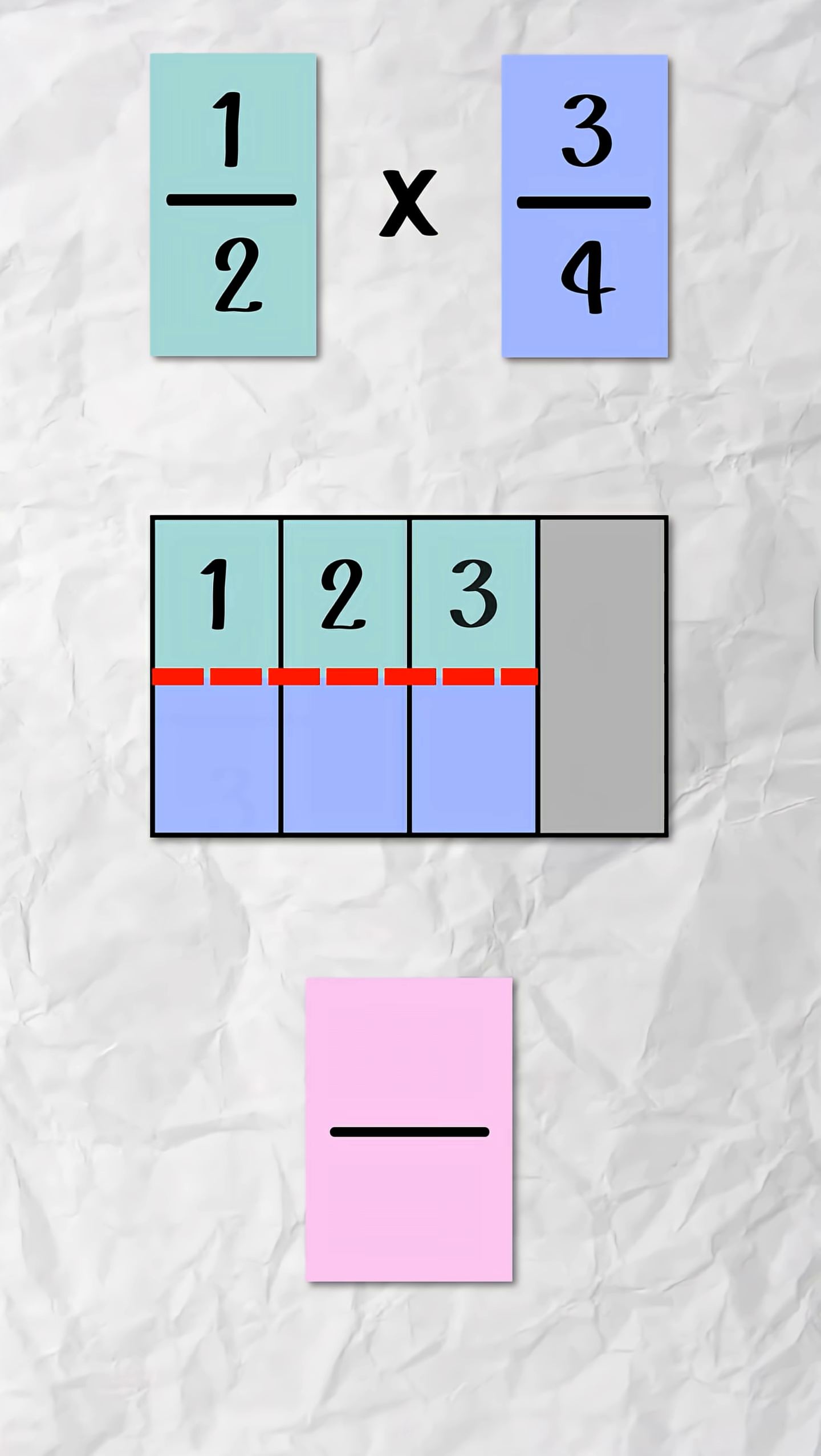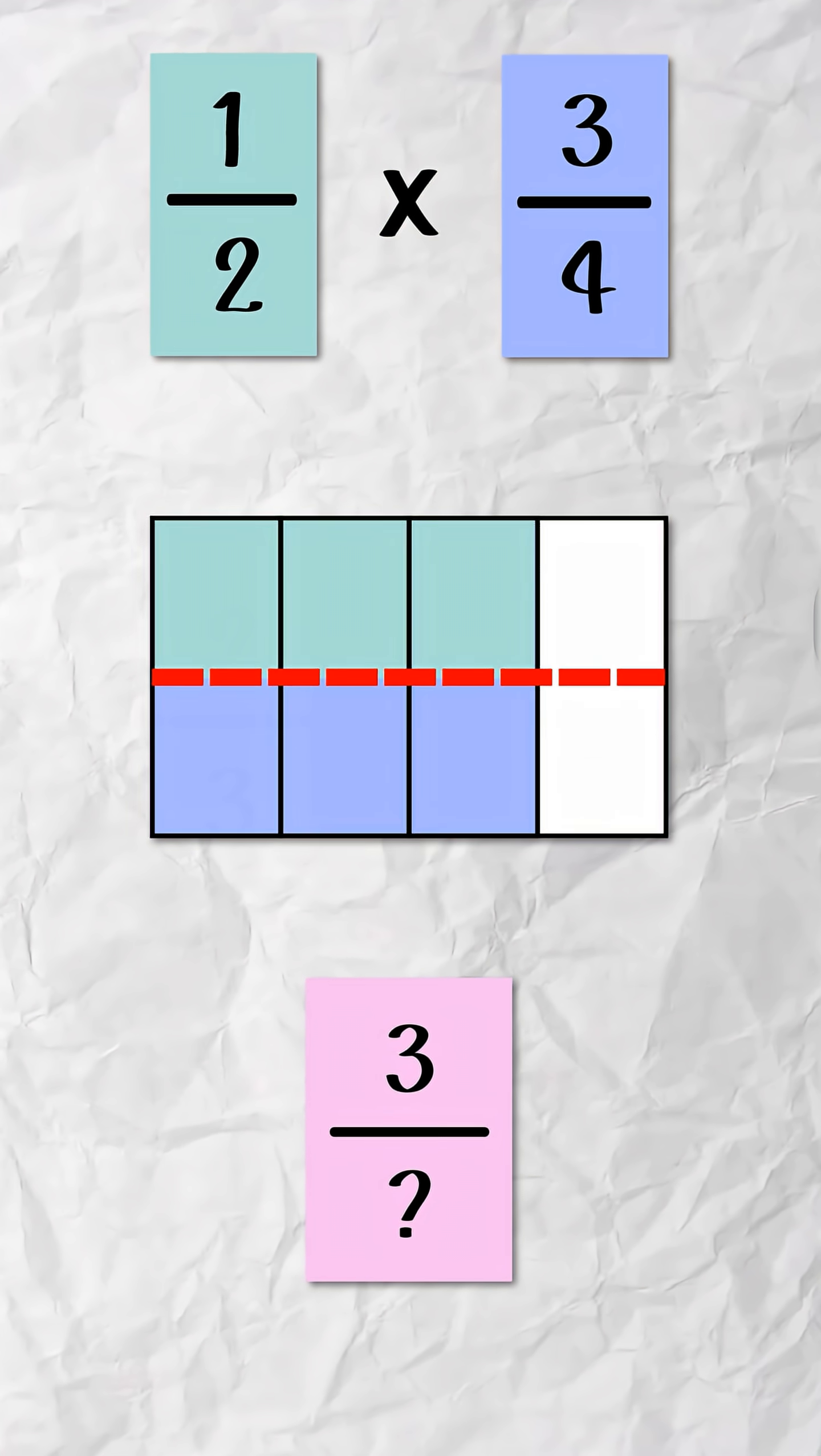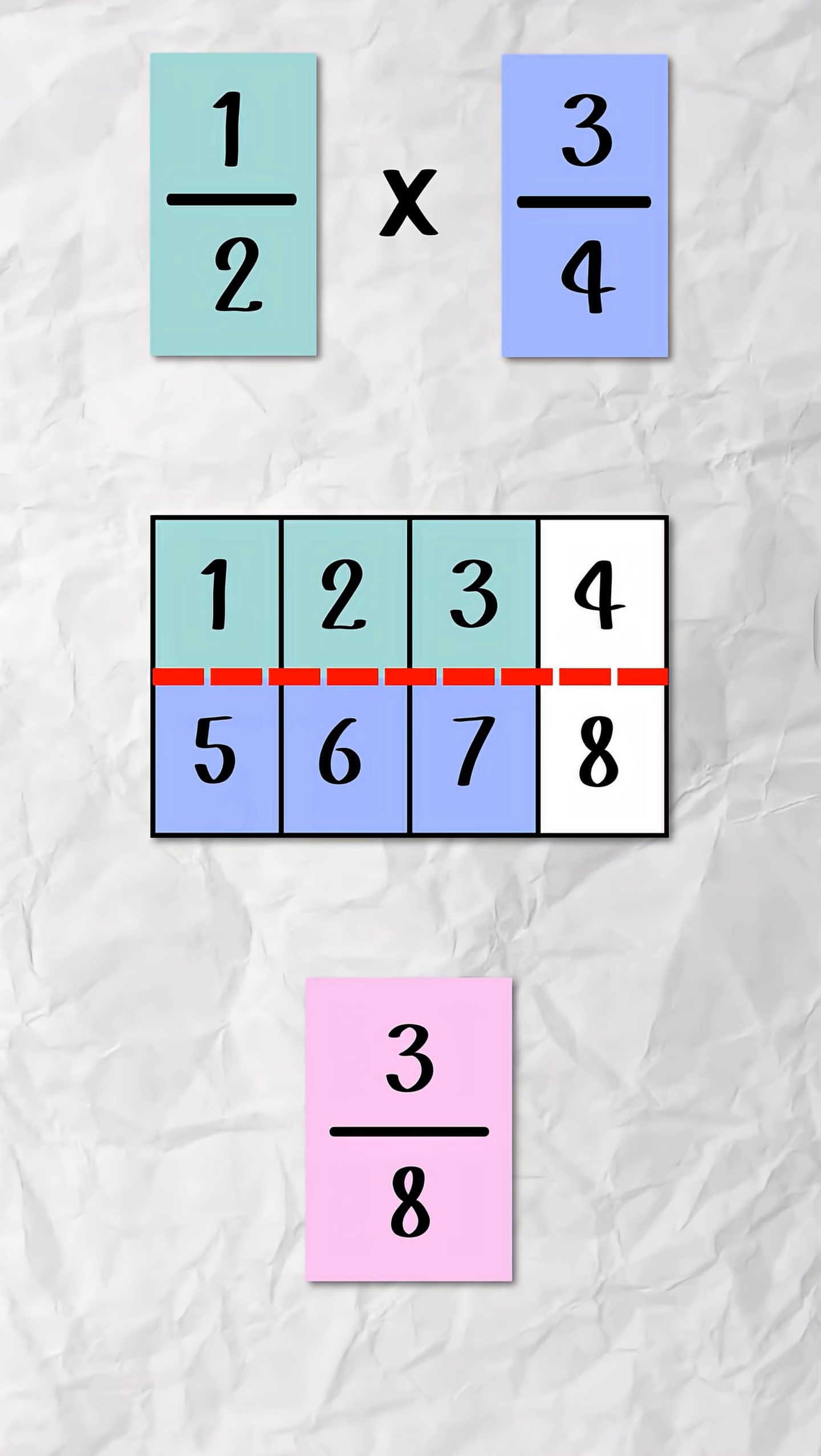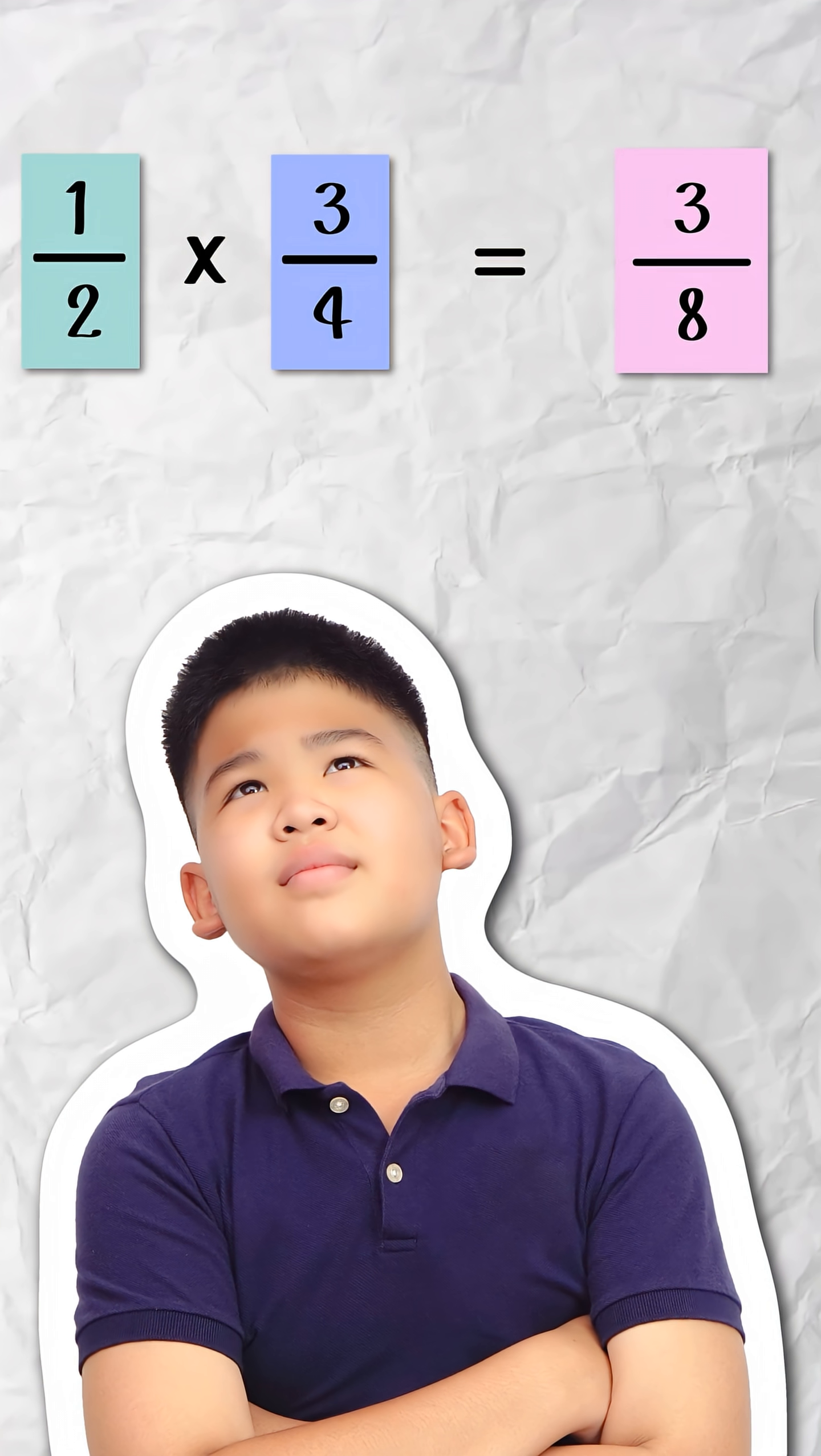We have three equal pieces shaded. That's our numerator. But what's our denominator? Remember, our one-whole was the big rectangle. The denominator tells us how many equal-sized parts make up one whole. There's eight equal-sized pieces that make up the one-whole, and we have three of them. So one-half times three-fourths equals three-eighths.